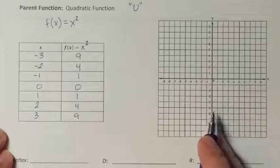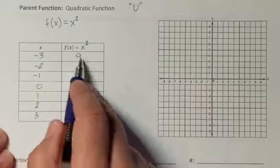Now that I have my x, y table, we're going to come over here and we're going to graph it. The coordinate point negative 3, 9.